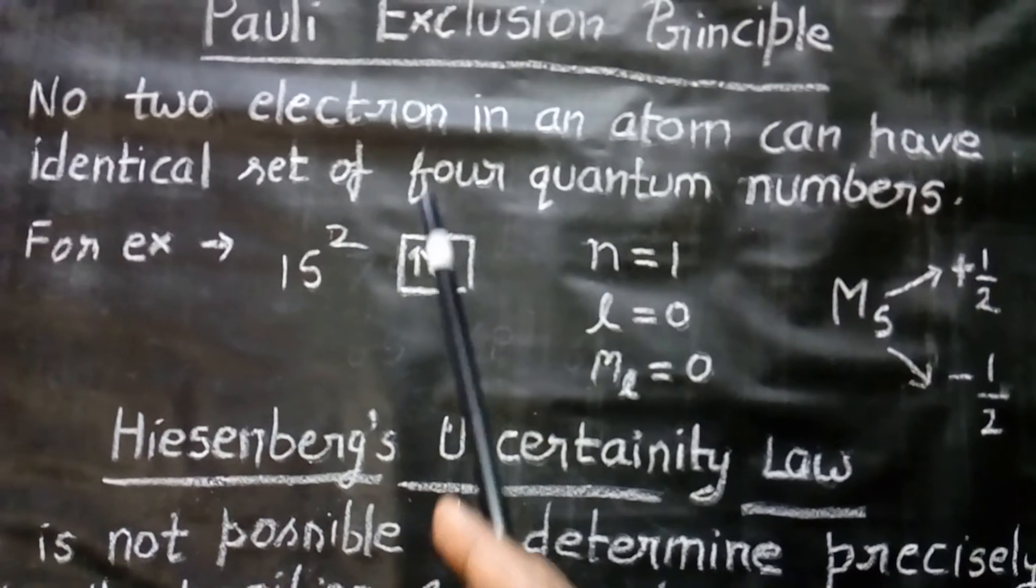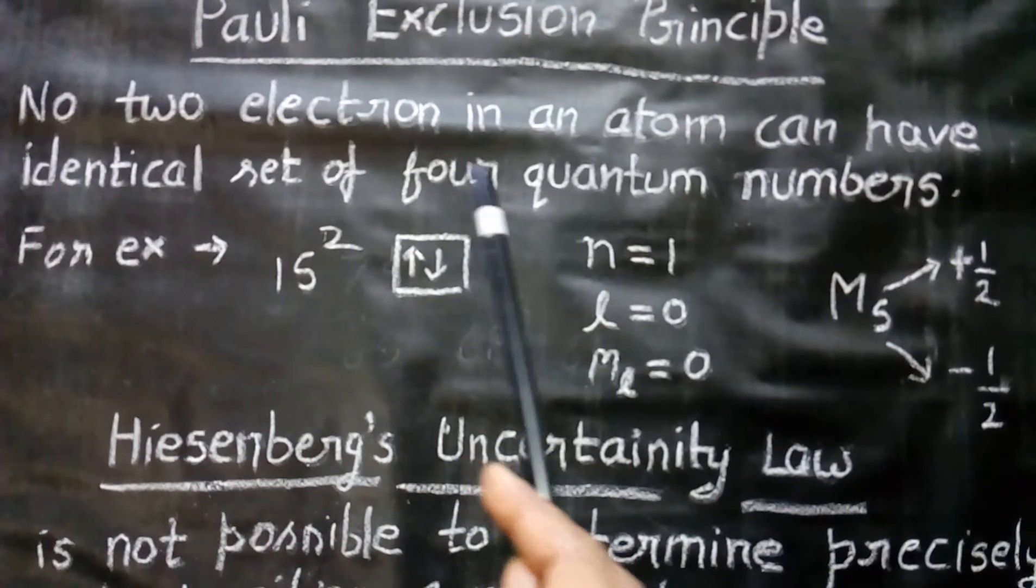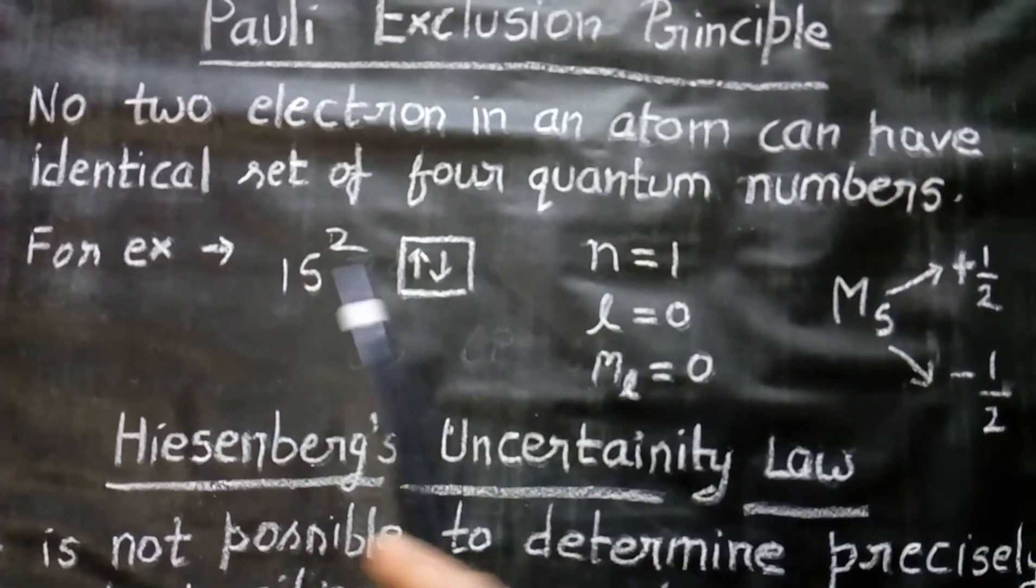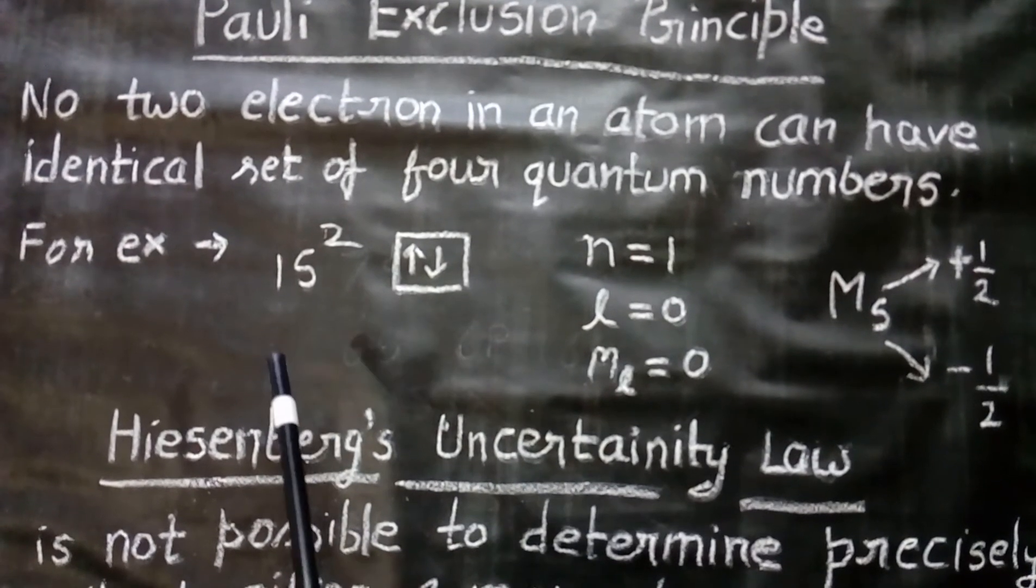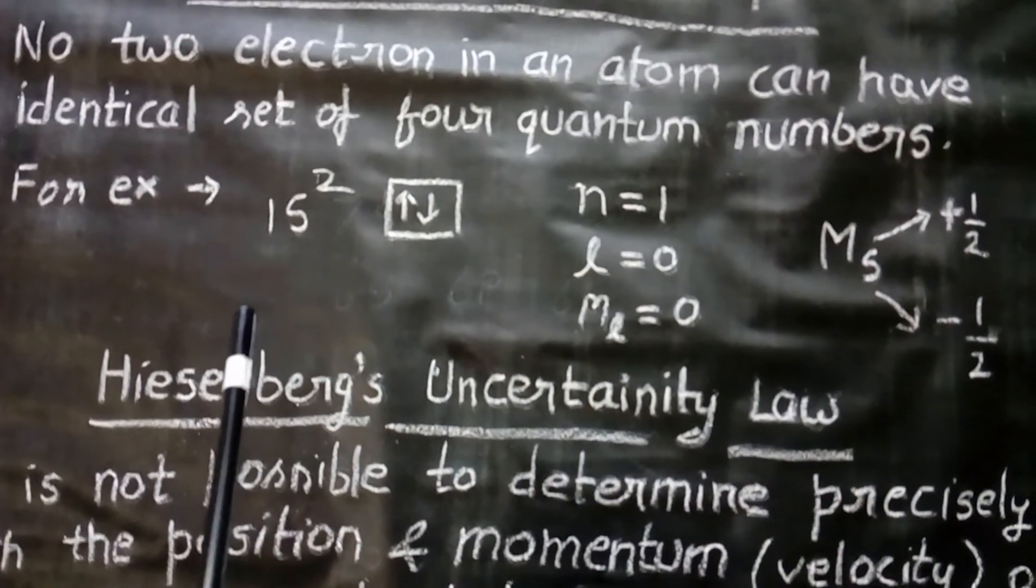If the 2 electrons have 3 same quantum numbers, then the 4th must be different. For example, in the case of 1s2, there are 2 electrons.